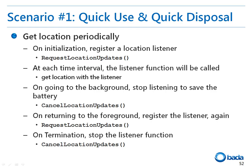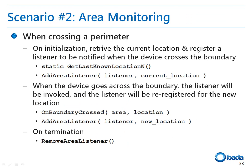If the application returns to the foreground, the listener is registered and the RequestLocationUpdates function is called. Then the location is updated periodically. Finally, if the application is terminated, the location update is stopped using the CancelLocationUpdates function. The second scenario is to perform monitoring for when the device moves out of the specified area.